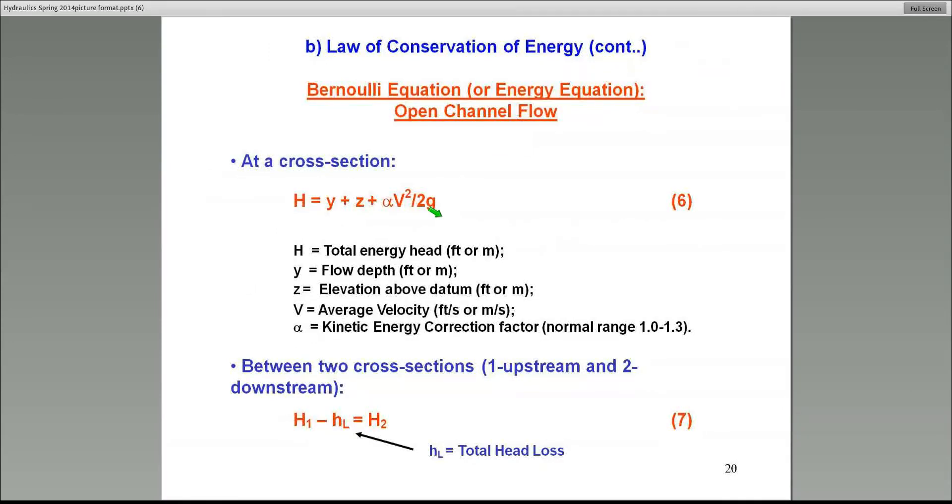For an open channel system, I can define the same thing as I did for the pipe system. The total head at any point, or the total energy, if you want to call it, is Y instead of P over gamma. I substitute the flow depth, Y. By the way, this is the vertical flow depth. I won't get into the debate about whether that is accurate enough to use that. We're just going to use it for small slope channels. It's quite reasonable to assume the vertical flow depth represents the hydrostatic pressure at the bottom.